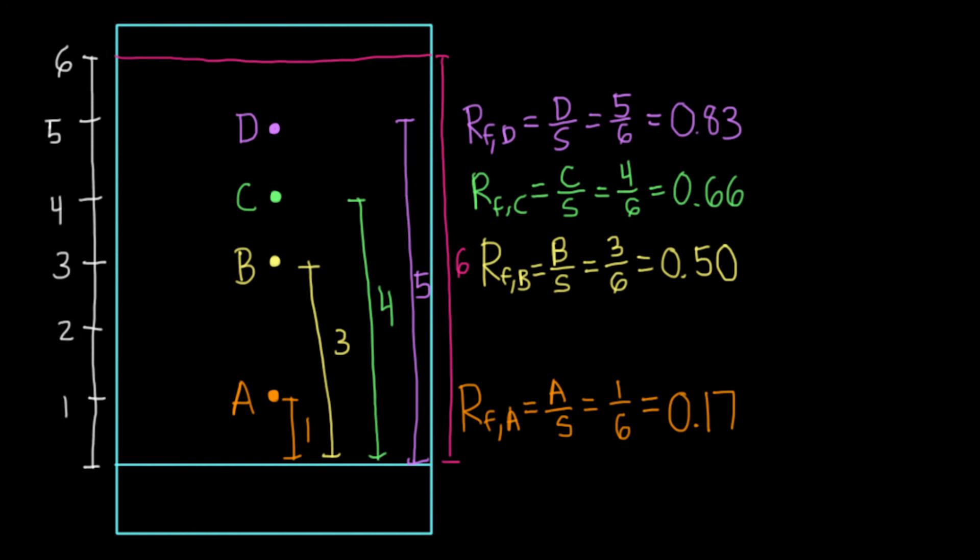Now what can we say about these overall trends? Again, we said that compounds that travel really far are pretty nonpolar, and compounds that don't travel very far at all are more attracted to the stationary phase, and hence are more polar. So if we look at these RFs, we can show that there really is a trend here. Compounds with a smaller RF are more polar since they're more attracted to the stationary phase, and compounds with a bigger RF are less polar since they're more attracted to the mobile phase.